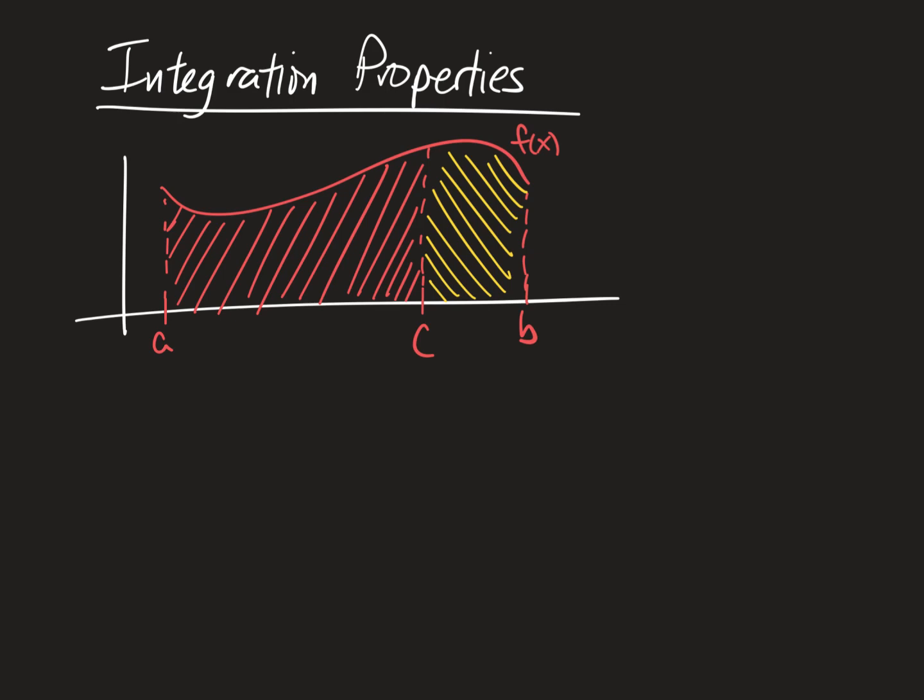When you understand that idea, then you can go back and take a look at the definite integral of f of x dx from any number to that same number. This should be an interval along the x-axis. So if you start here and end here, you're finding the area of essentially what is a line that has no area. If you don't move from point A to anywhere else on the x-axis, you do not have a width to find your area.